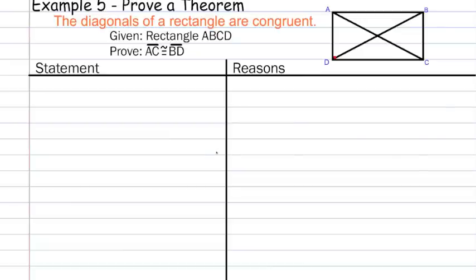Here in Example 5 — the reason I'm starting with Example 5 is because this is the second of a two-part series on special parallelograms — we're going to prove a theorem. The theorem, shown here in orange, is: the diagonals of a rectangle are congruent. We're given rectangle ABCD, and we need to prove that segment AC is congruent to segment BD.